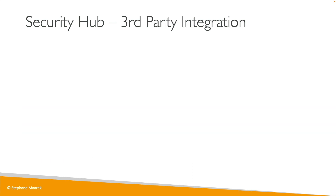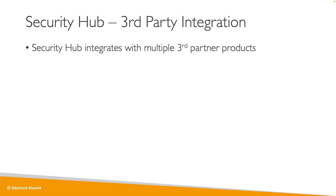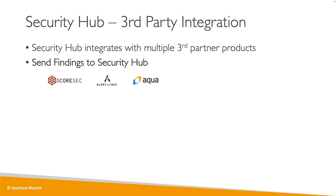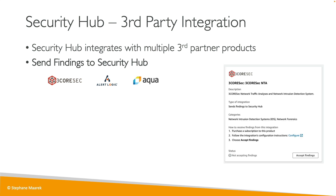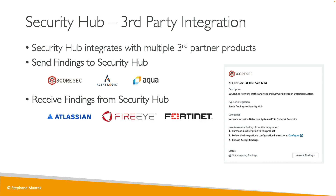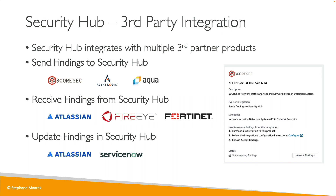Security Hub can also receive data from third-party integrations, and can send data to other partners. Services like 3CORSEC, AlertLogic, and Aqua can send findings to Security Hub. To enable these, you go to the console, find the partner you want, and click Accept Findings — for example, to support intrusion detection systems and network forensics. Security Hub can also send findings to services like Atlassian, FireEye, or Fortinet. Additionally, some third-party integrations like Atlassian or ServiceNow can loop back into Security Hub and update findings to archive them.